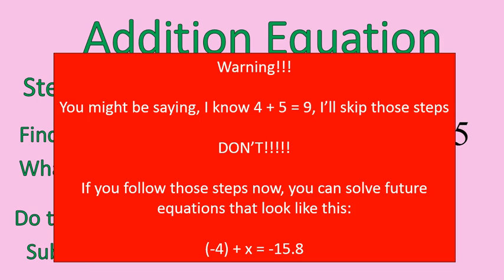Now, warning. I know you might be saying, I know that 4 plus 5 is 9, so I'm just going to skip all those steps and plug it in. Please don't. The reason that I'm suggesting you don't do this is because if you follow these steps now, you can use those exact same three steps for solving problems that look complicated like this. Negative 4 plus x equals negative 15.8. You probably can't do that one in your head. Maybe you can. But more complicated equations, solving them, you follow the same exact steps. And if you can follow them for simple equations, you can follow them for complicated equations.